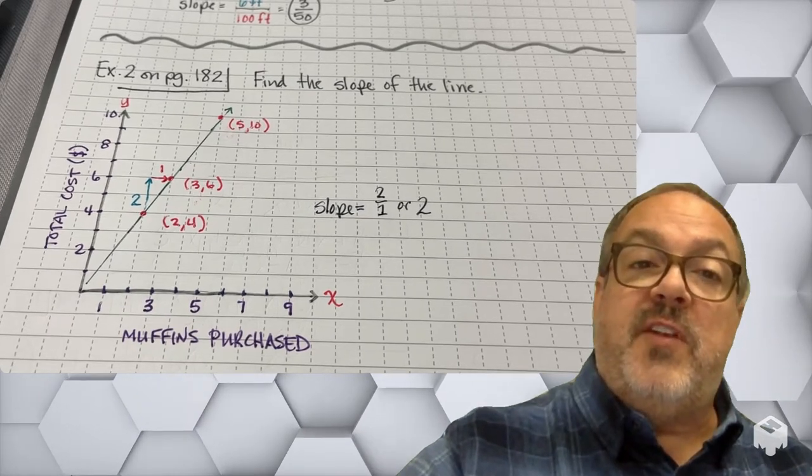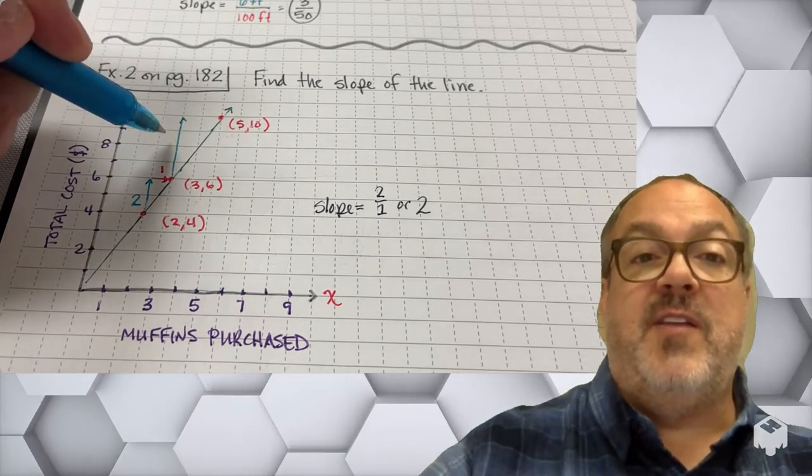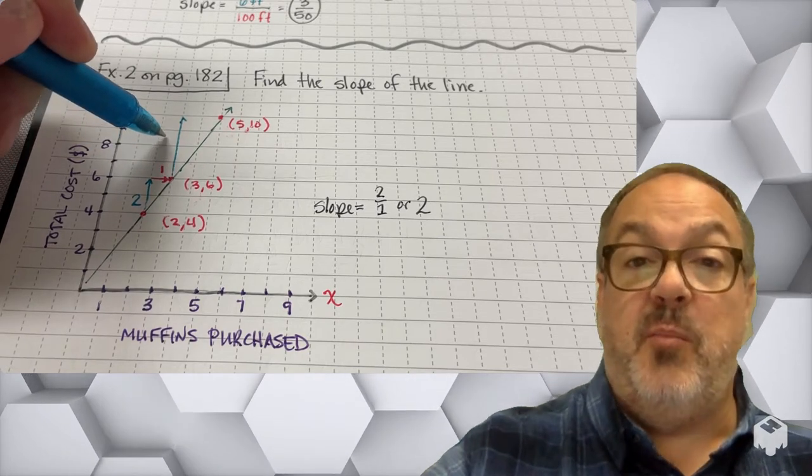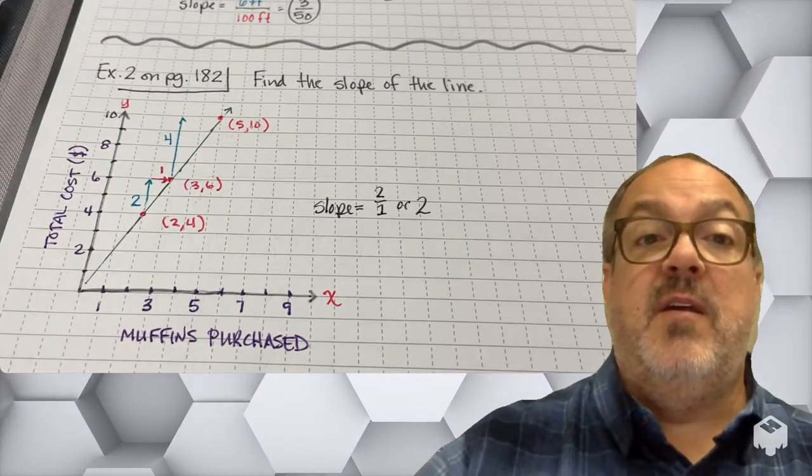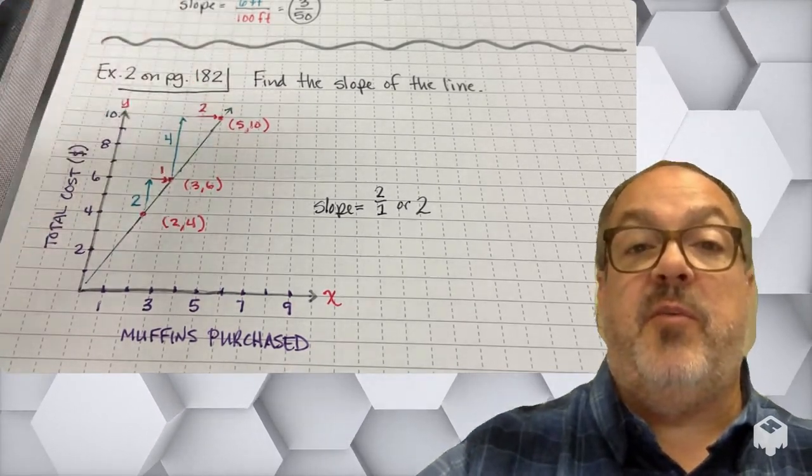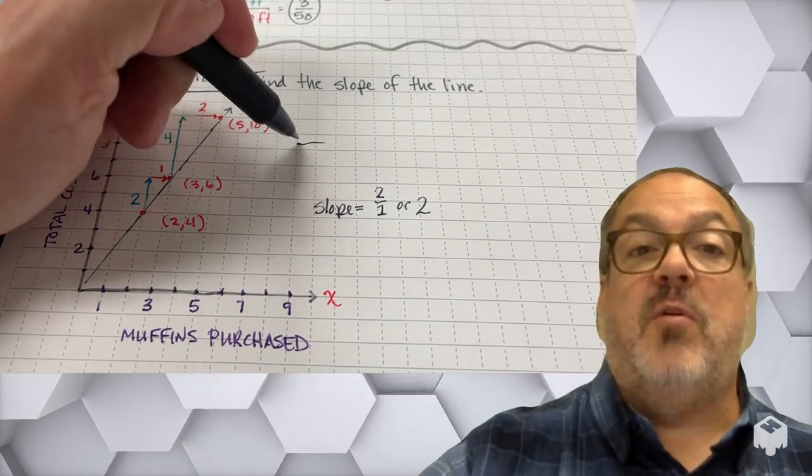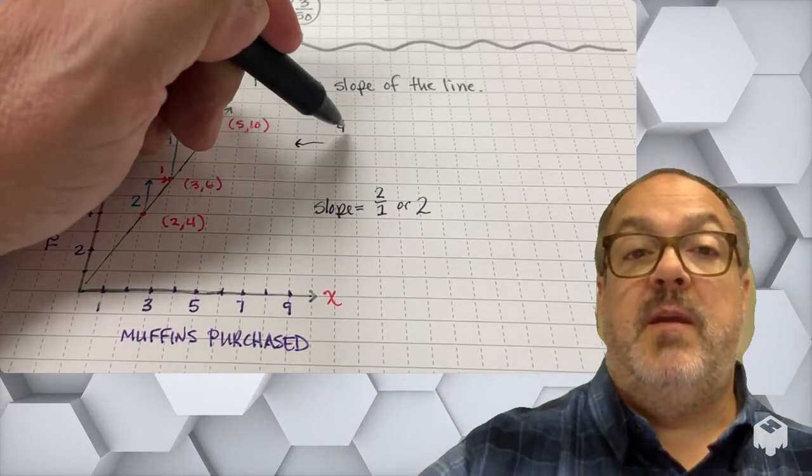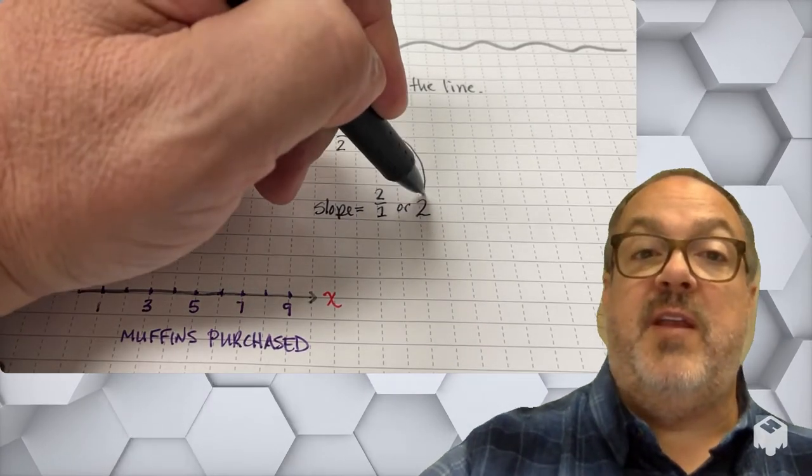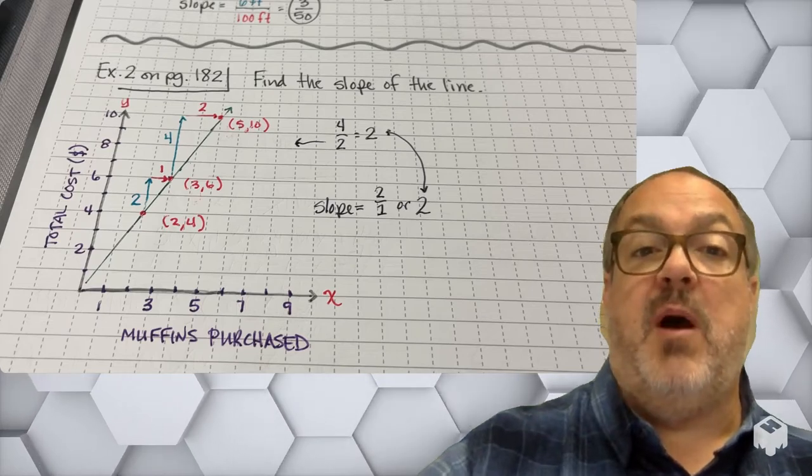Now, the slope of the line is going to be the same no matter what points I pick. So let's take a look at what happens if I go from the point (3,6) to the point (5,10). So from 6 to 10, that's a change of 4 units, and then from 3 to 5, that's a change of 2 units. So I have 4 over 2, and if I simplify that, I'll get 2 wholes. So notice that my slope is the same, 2, no matter where I am on that line.